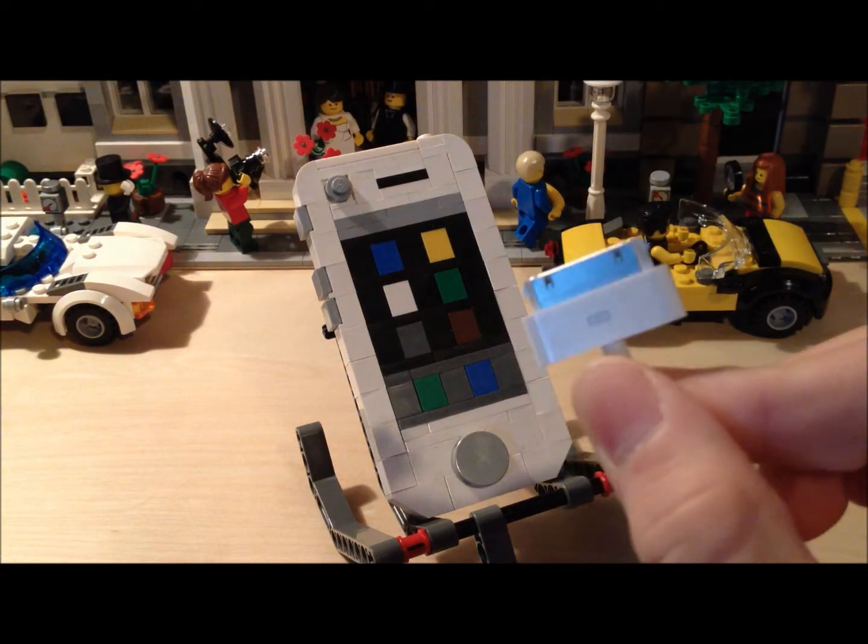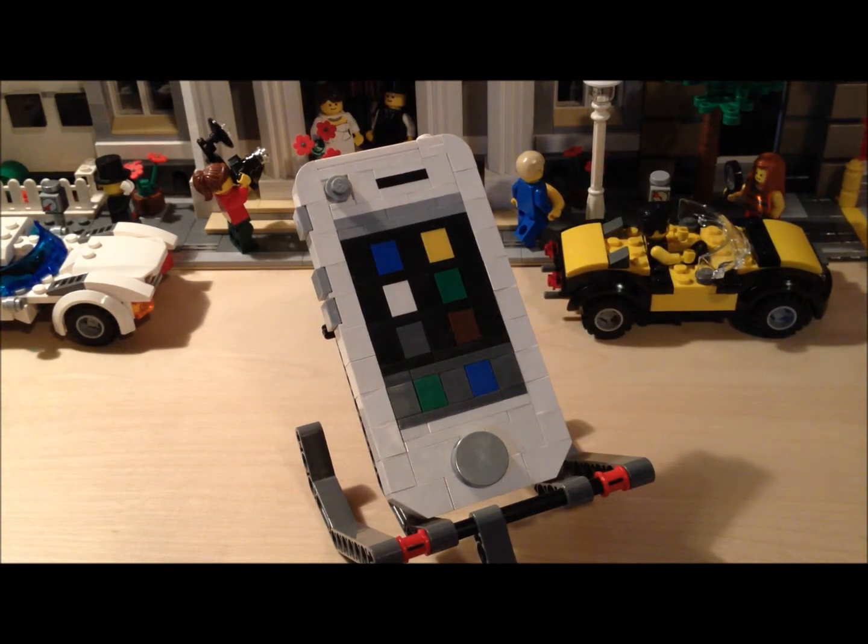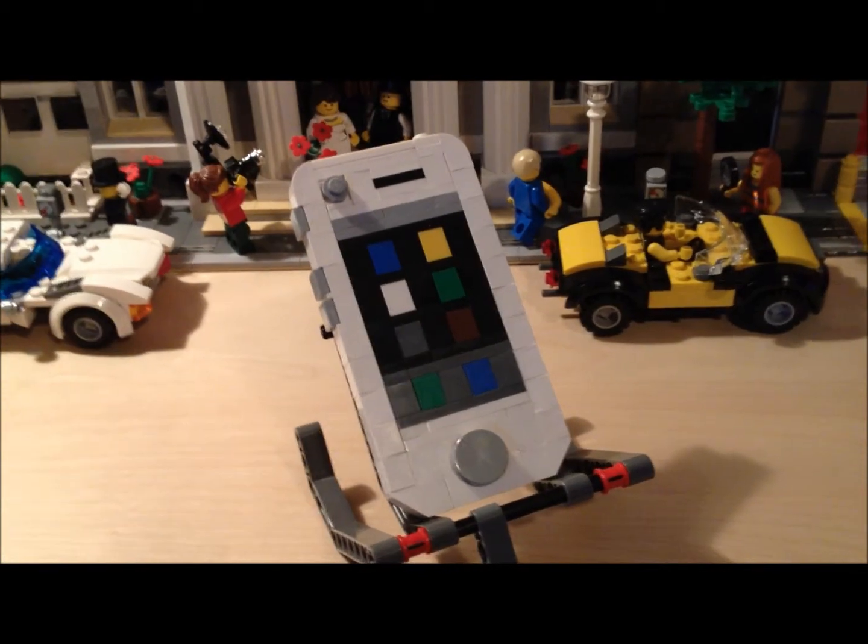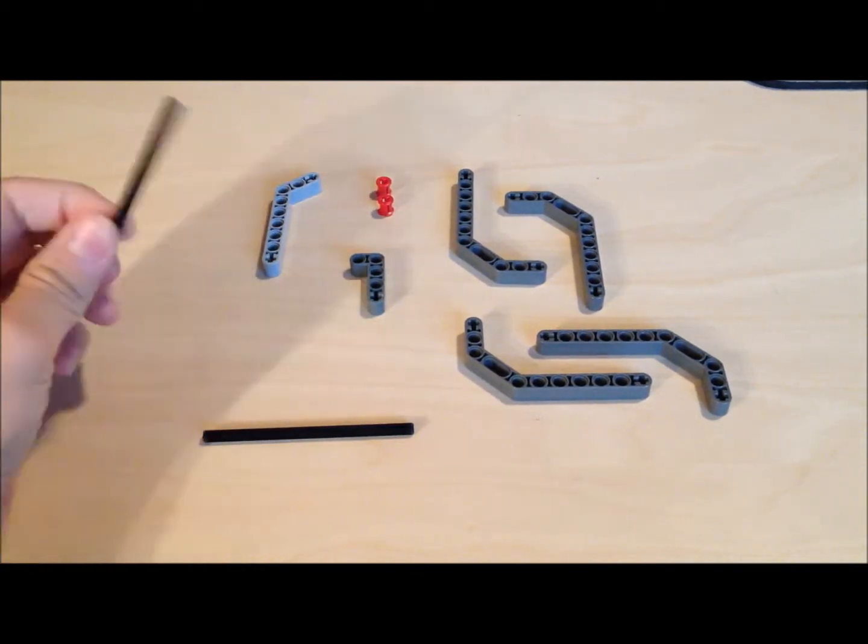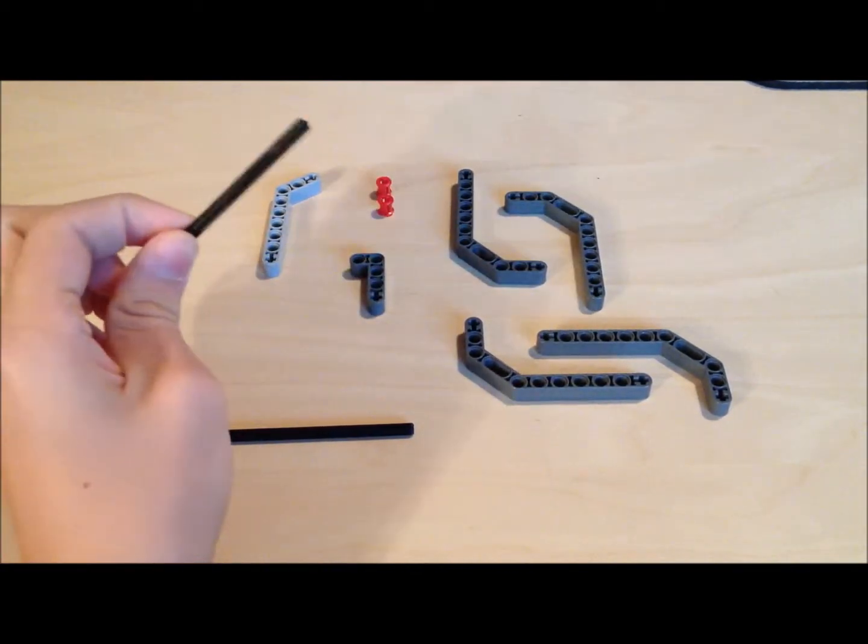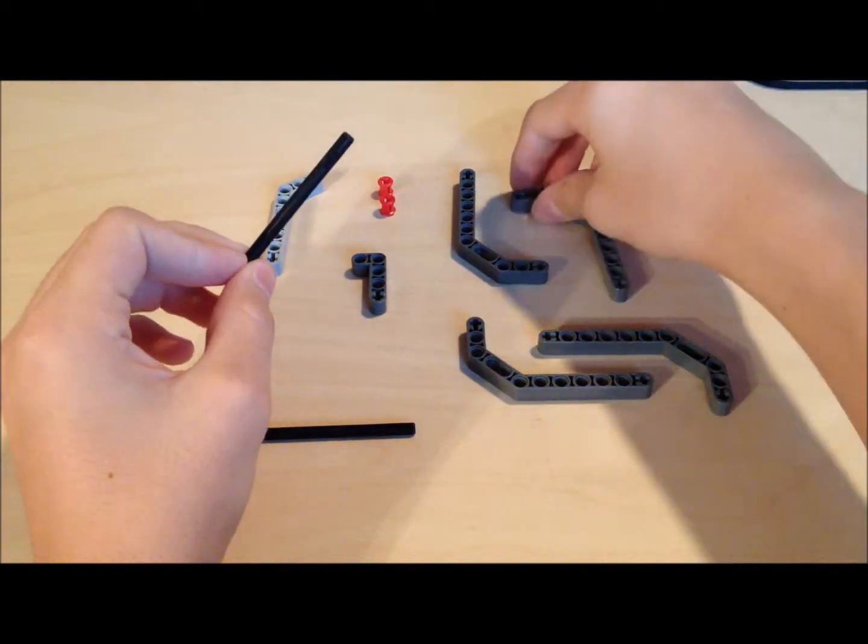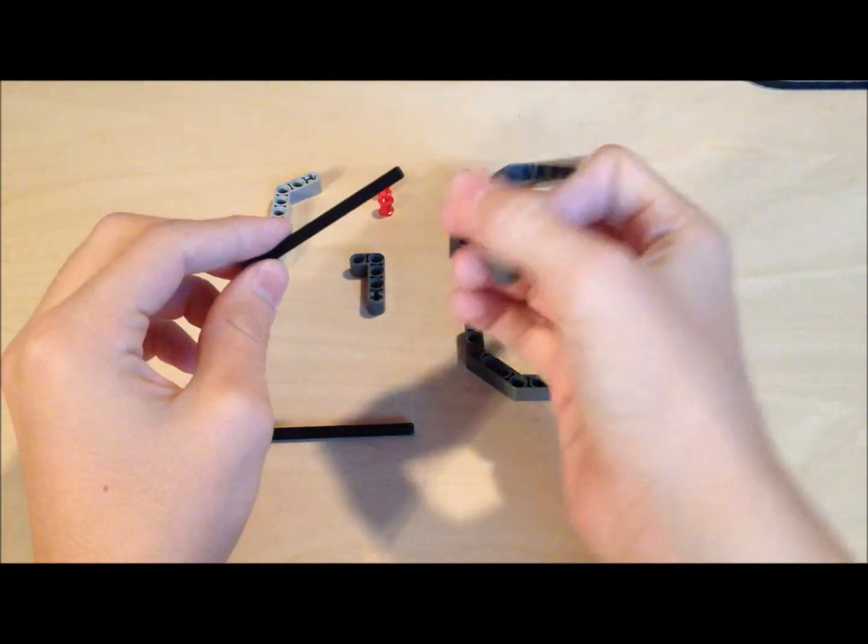Alright, these are the pieces that you'll need for your iPhone stand. What you want to do is take this eight-stud long plus rod and simply attach these angle pieces to the end right there.